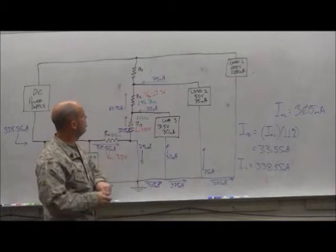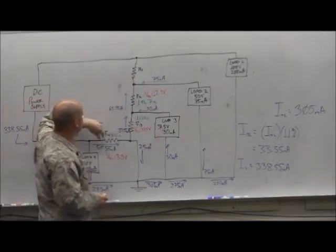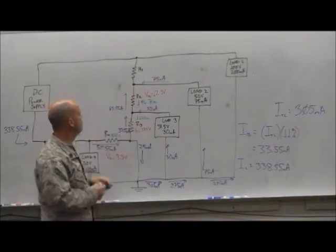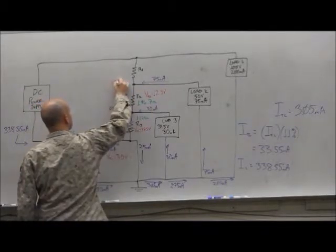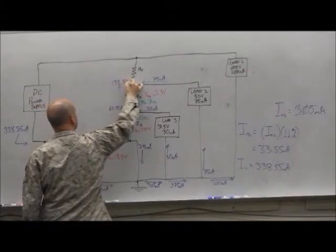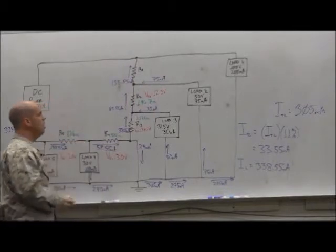Okay, current going across R1. These two currents here combine 63.55 and 75 milliamps. What do we get? 103.55 milliamps. That goes across R1.